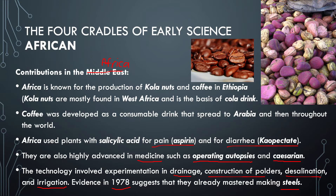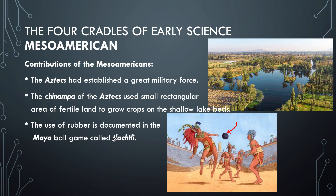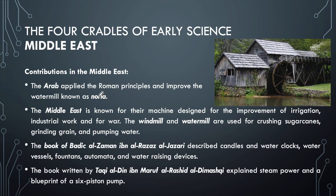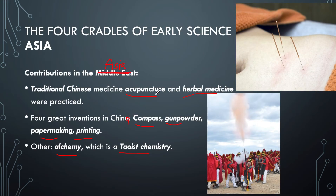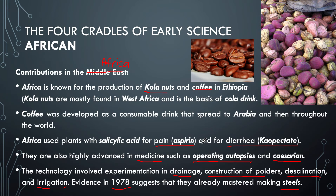So those are the contributions of the four cradles of early science — Mesoamerican, Middle East, Asia, and Africa. Salient points: for Mesoamerica — the chinampa, tlachtli, kipus, and cocoa beans as currency. For the Middle East — the noria, windmill, and water mill. For Asia — acupuncture, herbal medicine, gunpowder, compass, paper making, printing, and alchemy. For Africa — cola nuts, coffee, salicylic acid, autopsies, cesareans, and steel making.